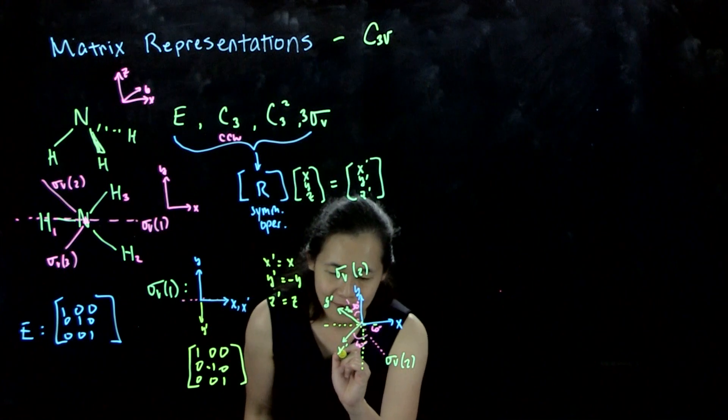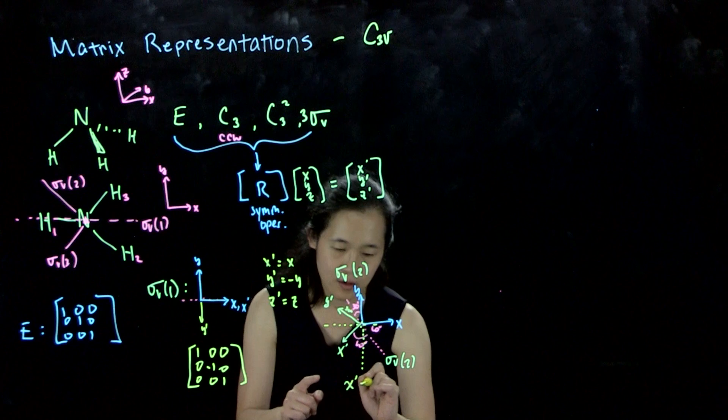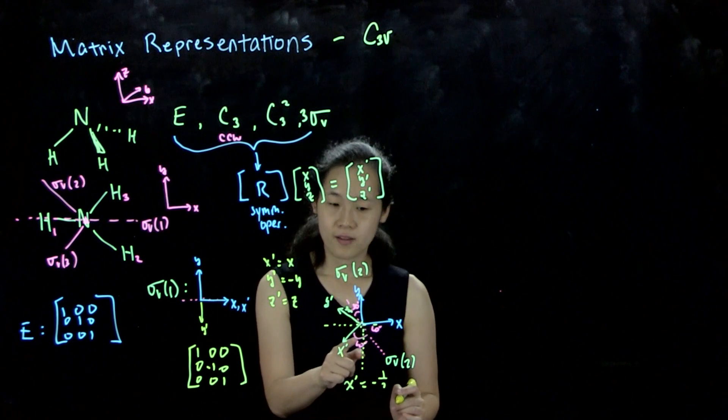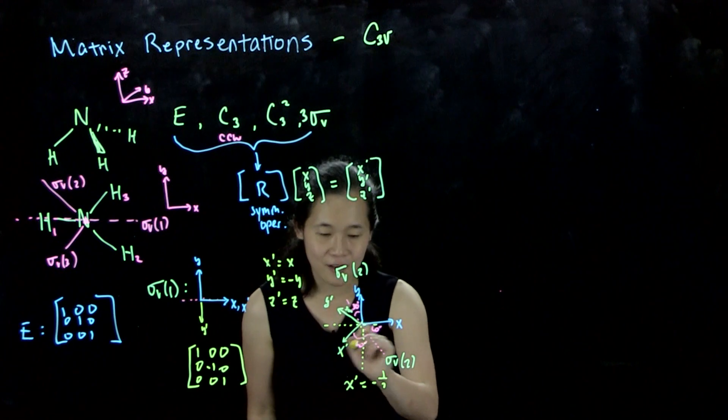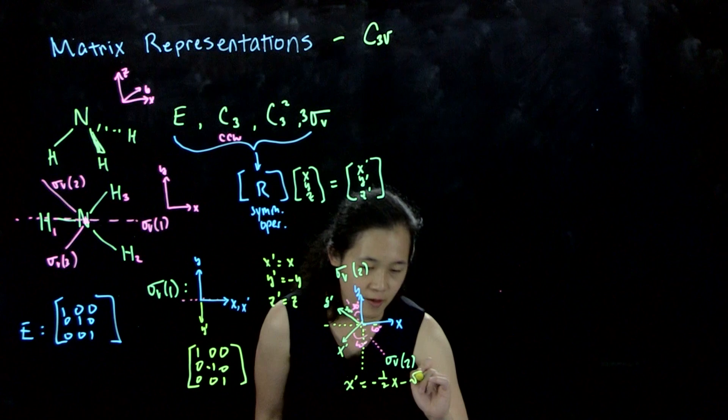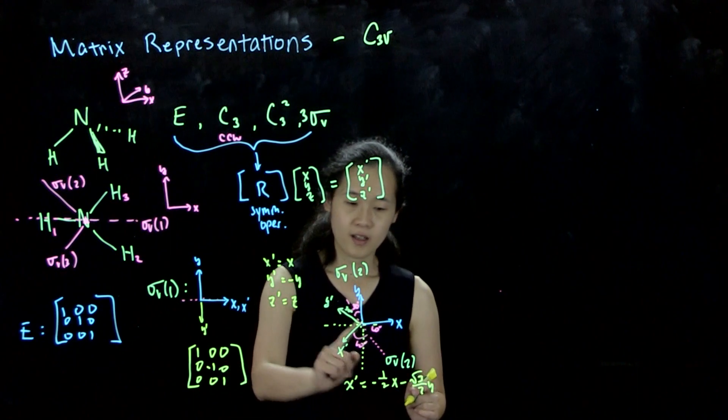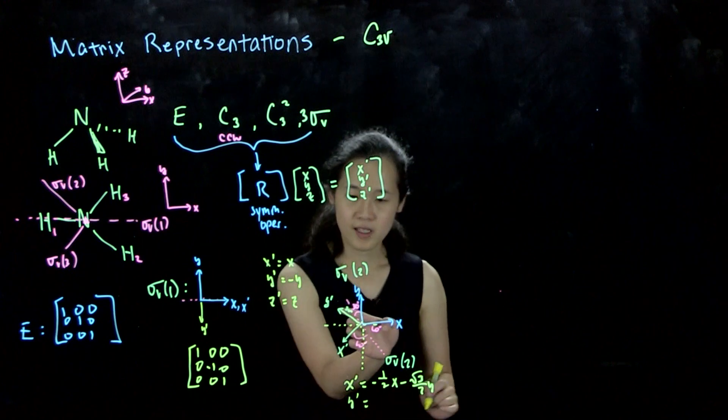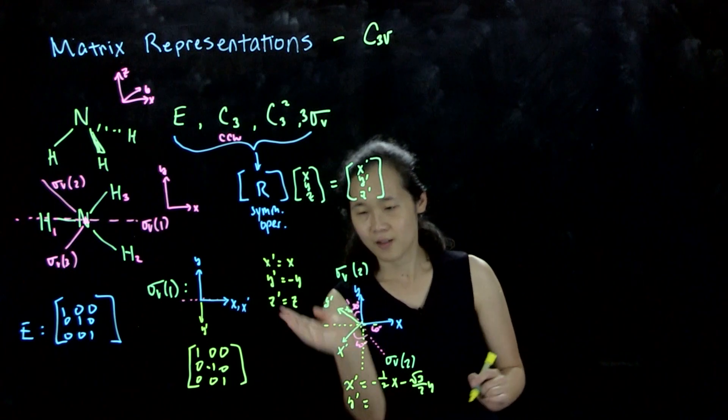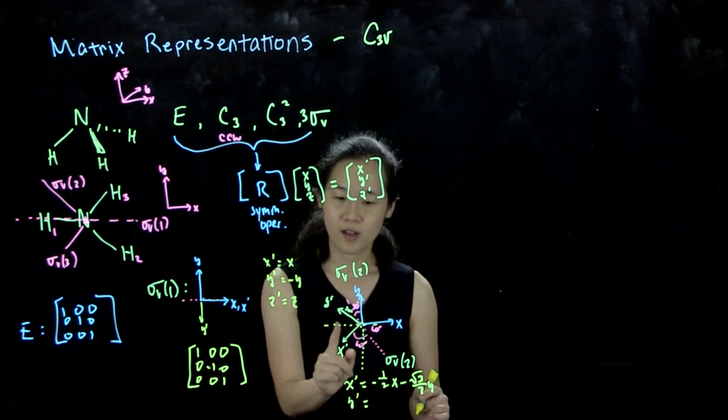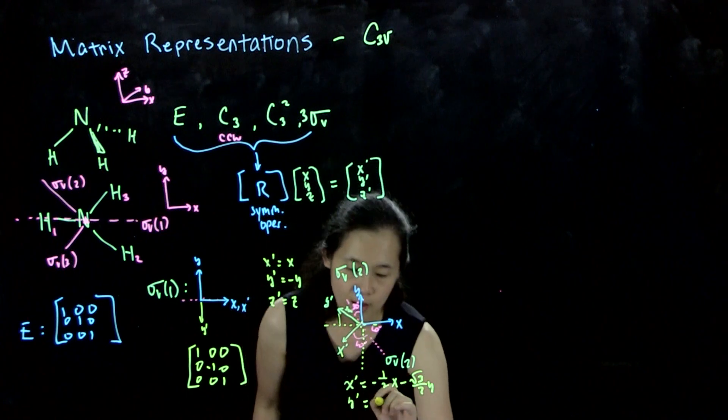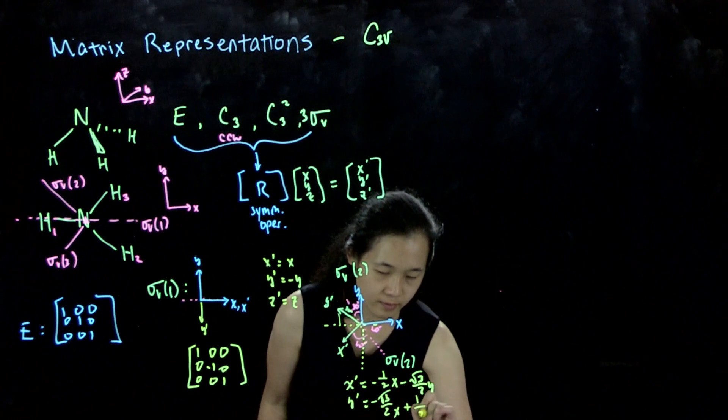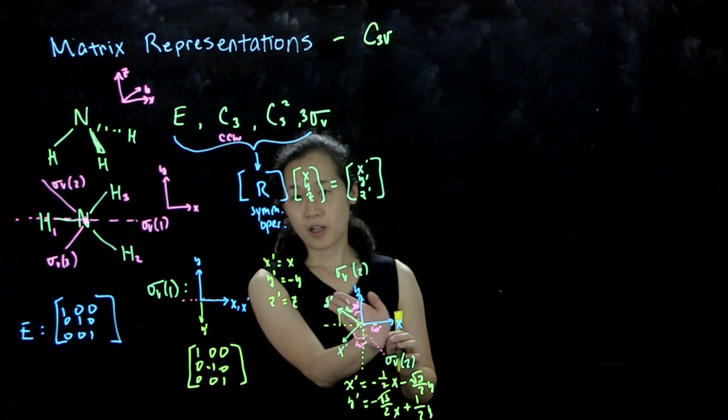So to do some trig, x prime is going to have to be equal to negative one-half x. If you remember your unit circle, our sine of 30 is one-half. So x is negative one-half x minus root 3 over 2 y. So if you see how this vector has changed, negative one-half and then root 3 over 2 going down. Similarly, y prime is going to be equal to, this is at this 60 degree angle. If you try it on the unit circle, you look at where the cosine and the sine are. So y prime is going to be negative root 3 over 2 x and positive one-half y.